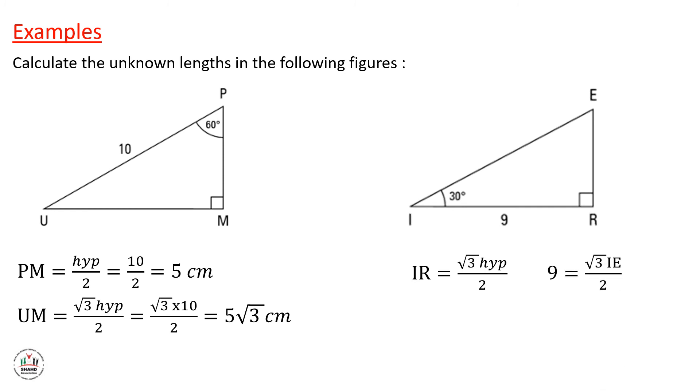And the hypotenuse is IE. So we can get the hypotenuse from this formula. And now IE will be equal to 9 times 2, which is 18, over the coefficient of IE, which is radical 3.